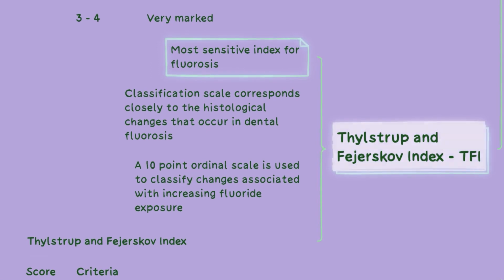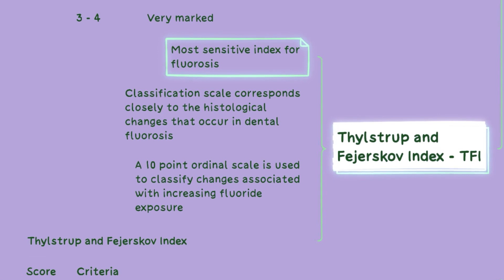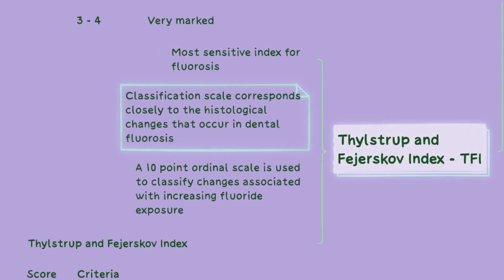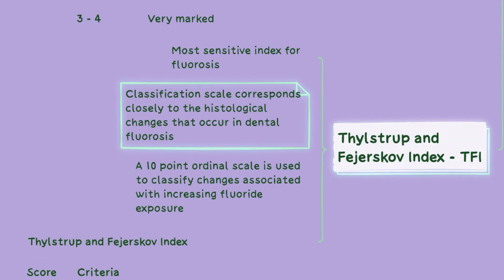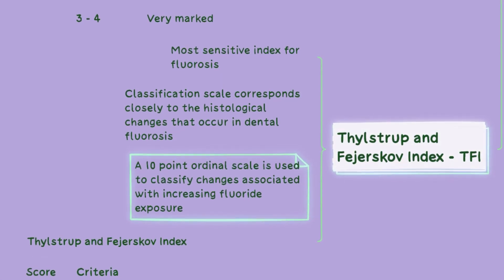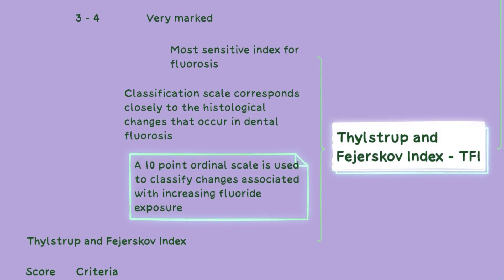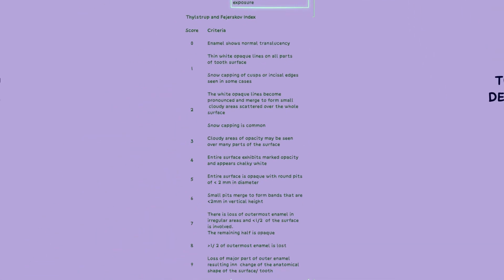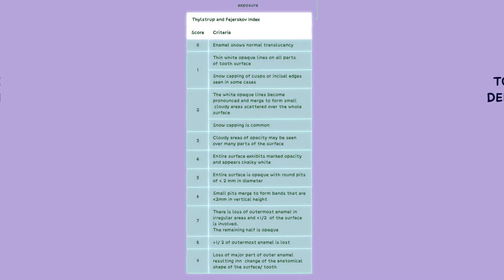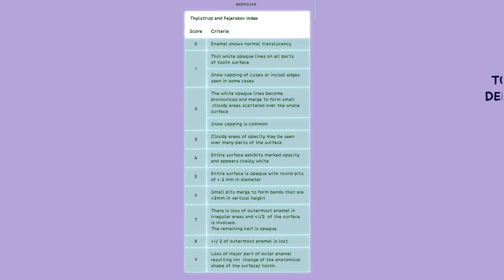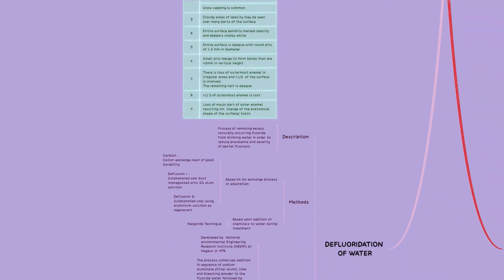The most sensitive index for fluorosis is the Thilstrup and Fedroskov Index or TFI. It is a classification scale that closely corresponds to the historical changes observed in dental fluorosis. The TFI uses a 10-point ordinal scale to classify changes associated with increasing fluoride exposure, with scores ranging from 1 to 9 depending on severity. You can pause your video here for a few seconds to make a note of this.